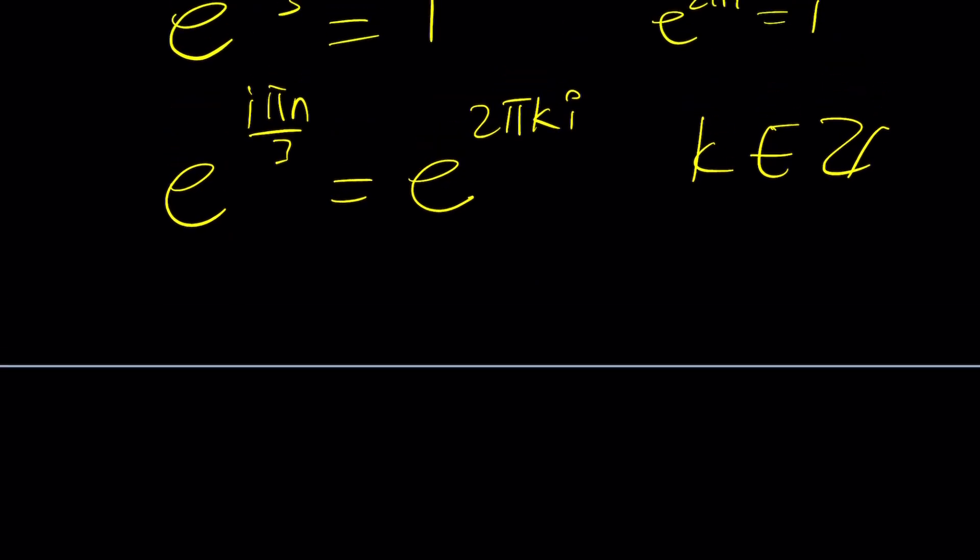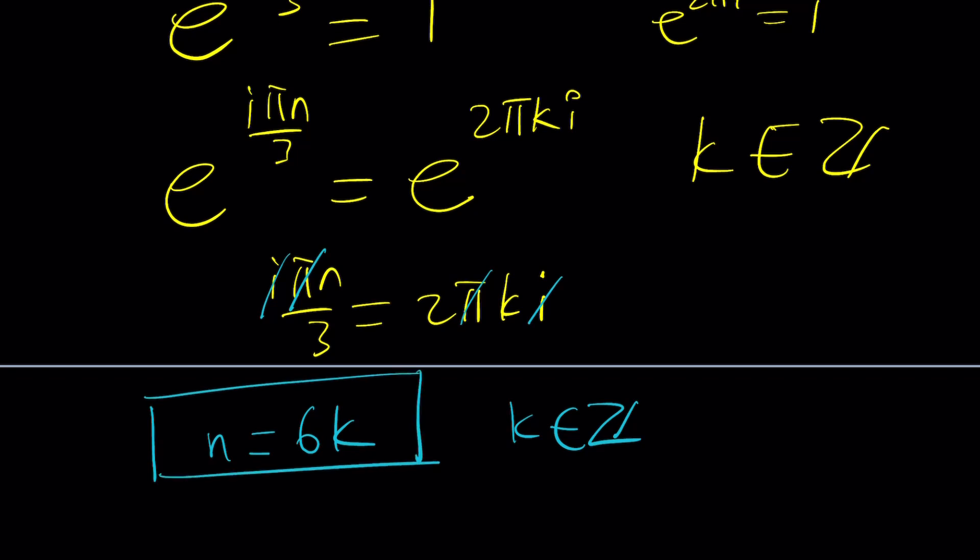So, now we get the following. iπn/3 equals 2πki. Go ahead and cancel out the π, cancel out the π. We end up with n equals 6k. k is an integer. n is an integer. n is basically a multiple of 6, as we said before. And this brings us to the end of the video.